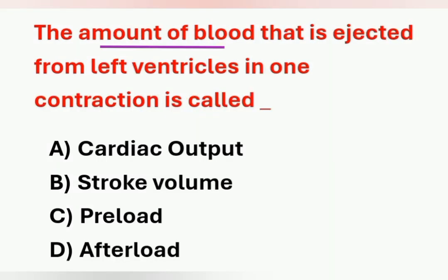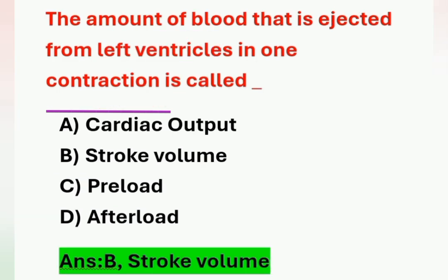Next question: the amount of blood ejected from the left ventricle in one contraction is called what? Options include cardiac output, preload, and afterload. The correct answer is stroke volume. Cardiac output equals stroke volume multiplied by heart rate. The normal stroke volume in an average person is 70 mL, giving a normal cardiac output of approximately five to six liters, usually five liters.